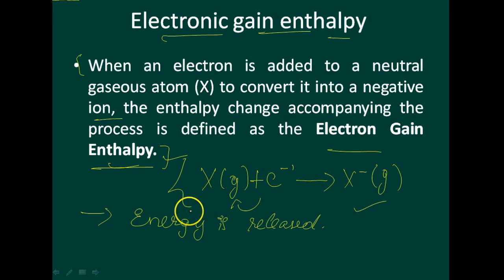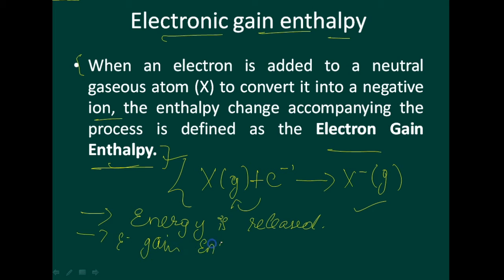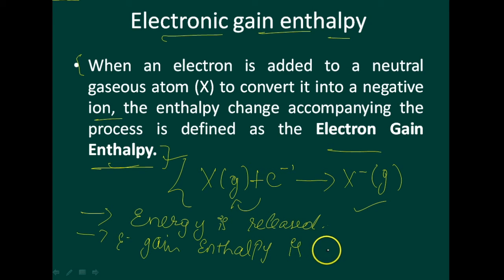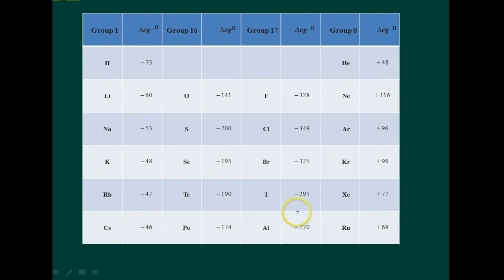When an electron is added to the atom, energy is released, and the electron gain enthalpy is negative. Electron gain enthalpy provides a measure of the ease with which an atom adds an electron. For example, consider the group 17 elements — they have very high negative electron gain enthalpy because they can attain stable noble gas electronic configurations by picking up an electron.